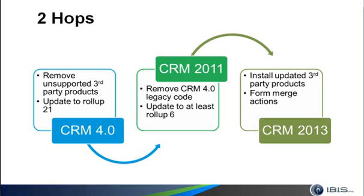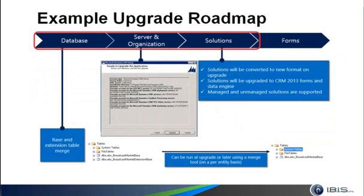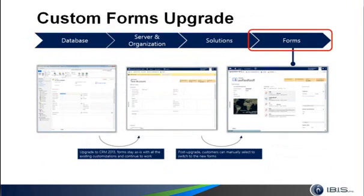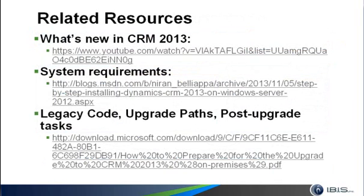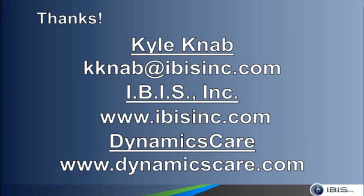Finally, in 2013 you can install any updated third-party products if they exist. Regardless of whether it's in-place or migration, your roadmap will look like this. The first step is the upgrade of your database, server, and solutions, which all happen when you import into your 2013 environment, and then once it's in, you can upgrade the forms. You can reference Kanika's video on what's new in CRM 2013, Microsoft's system requirements page for CRM 2013 on Windows Server, and their PDF guide for preparing for the upgrade. You can always email me at the address shown, and you can find this webinar posted at www.dynamicscare.com.